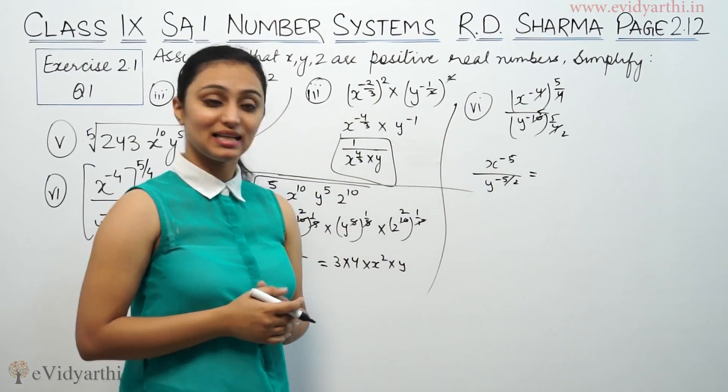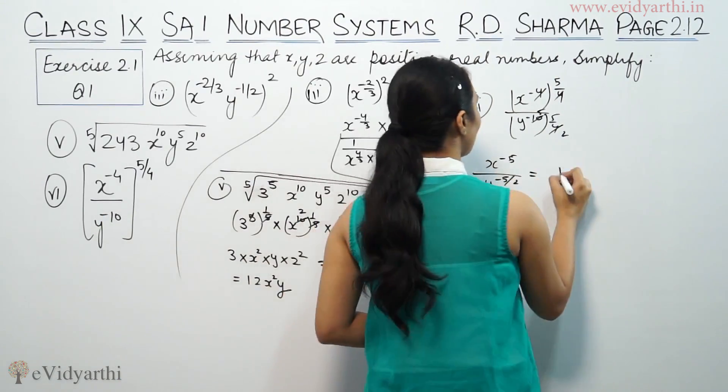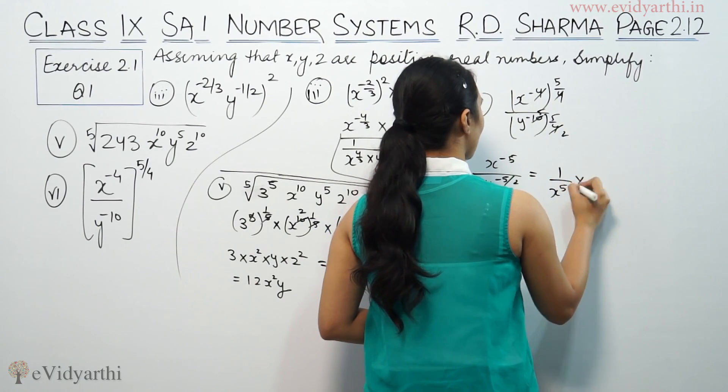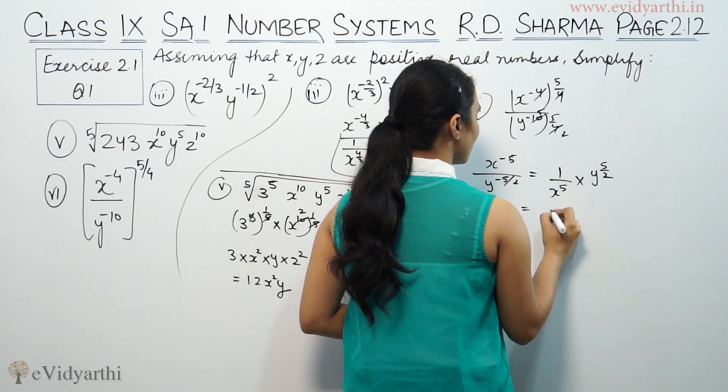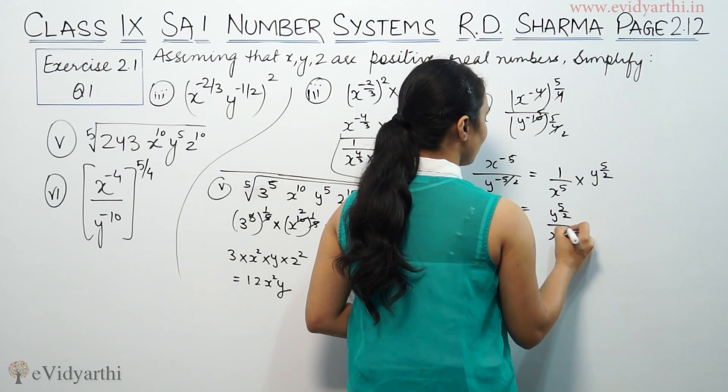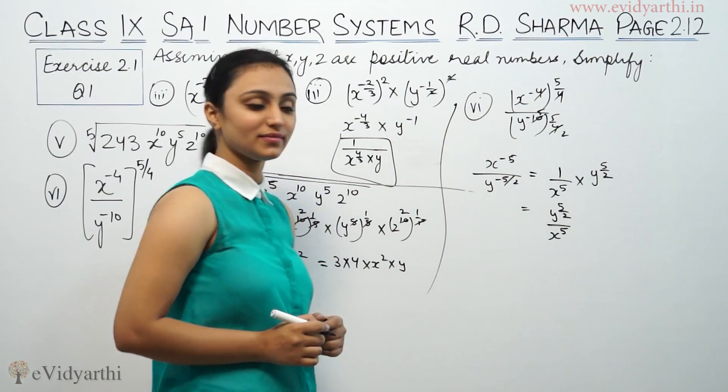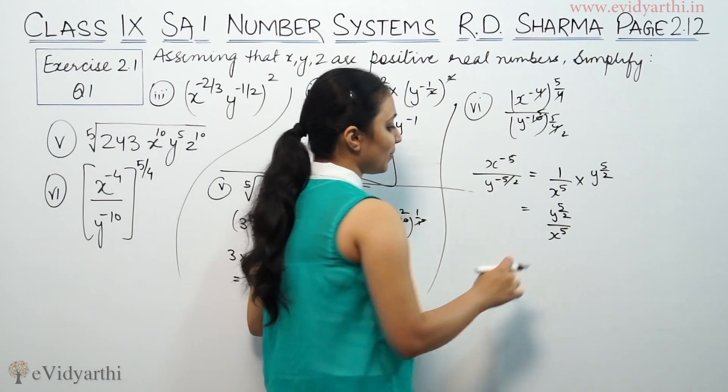Now the negative sign makes it reciprocal. So this will be 1 upon X to the power 5, and this will be Y to the power 5/2. So this is Y to the power 5/2 by X to the power 5. So this is our answer.